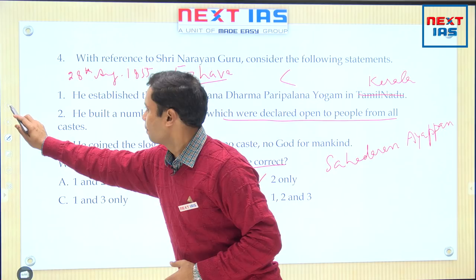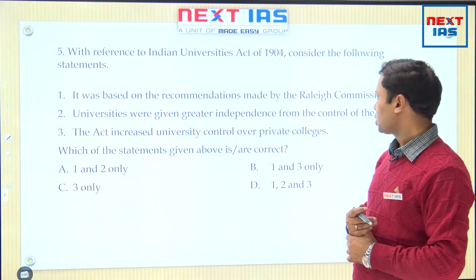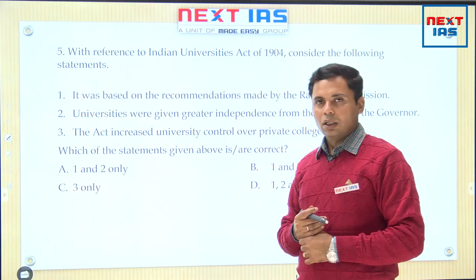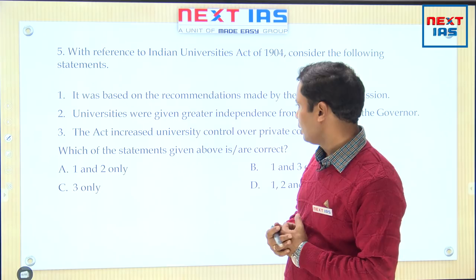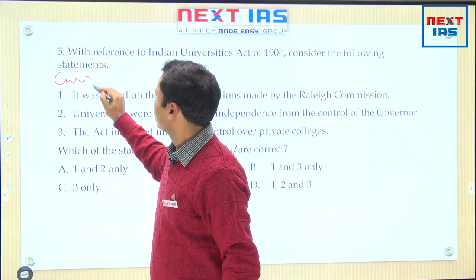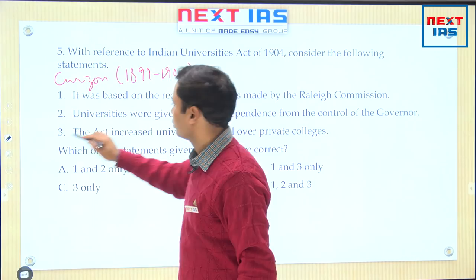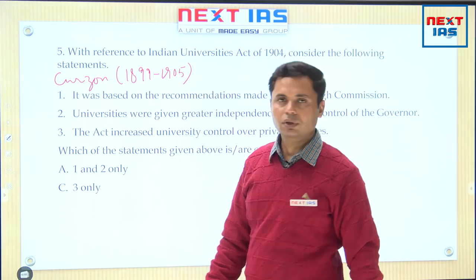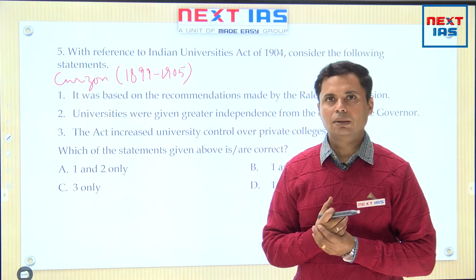Moving to the next question, number 5: with reference to the Indian Universities Act 1904, consider the following statements. It was based on the recommendations made by the Rayleigh Commission; universities were given greater independence from the control of the governor; and the act increased university control over private colleges. This act was passed by the government of Curzon, whose period in India as Viceroy was 1899 to 1905. When Curzon arrived in India, he viewed that colleges were a breeding ground for revolutionary terrorism.